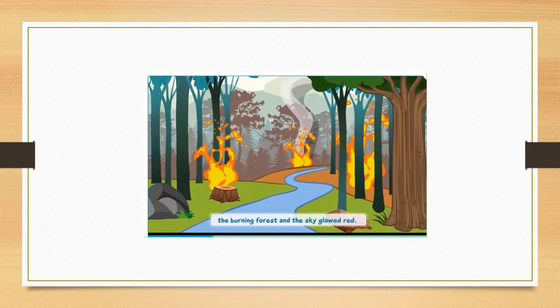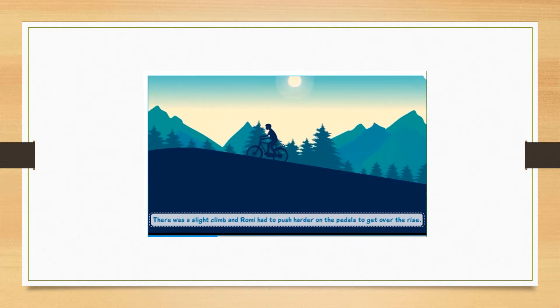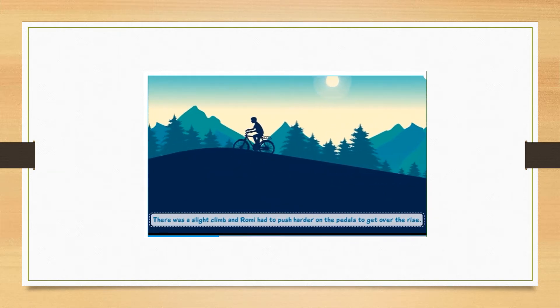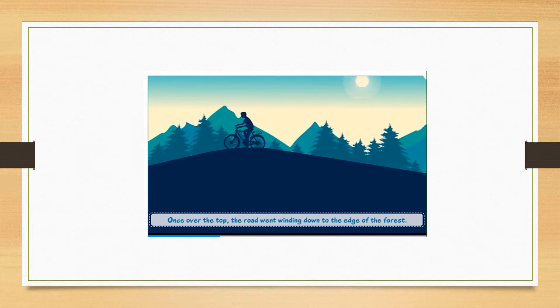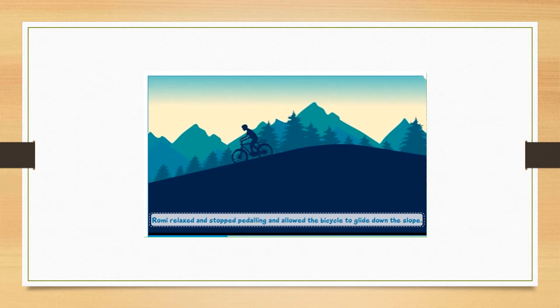The smoke rose from the burning forest and the sky glowed red. There was a slight climb and Romy had to push harder on the pedals to get over the rise. Once over the top, the road went winding down to the edge of the forest. Romy relaxed and stopped pedaling and allowed the bicycle to glide down the slope.